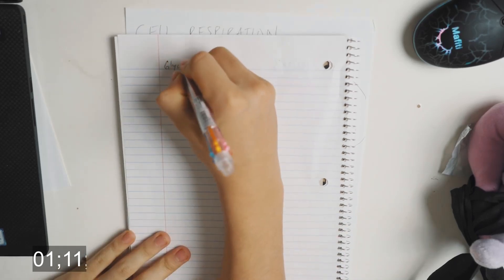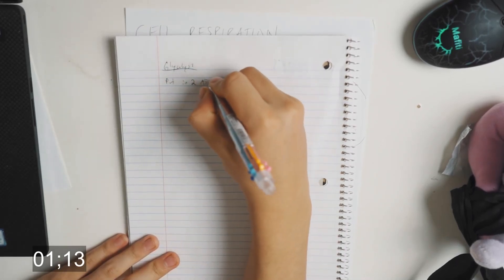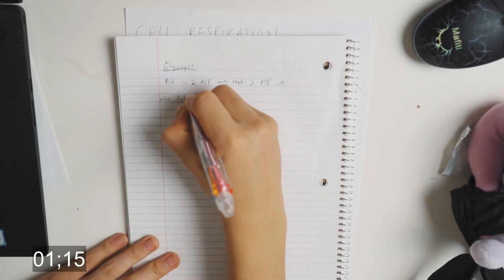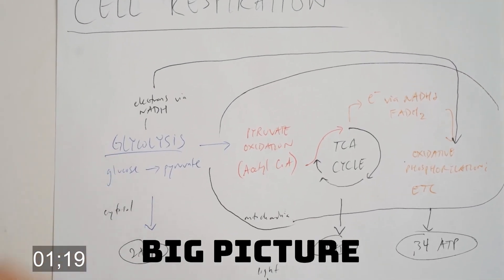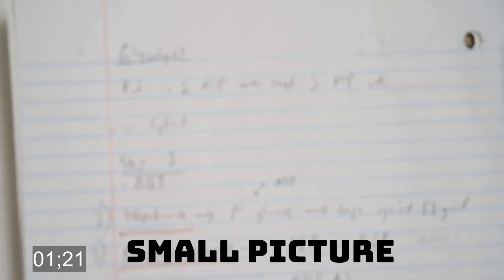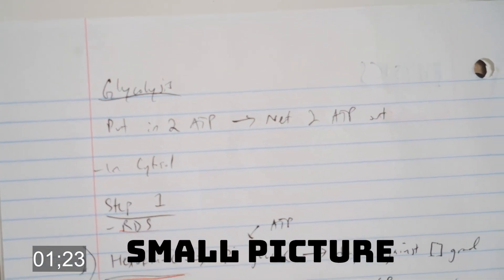Next you'll move on to the Detail slash Small Picture section. Here you'll be taking notes on the individual sections that fall within the big picture. For example, after doing a respiration overview, you might have an entire lesson on the investment phase of glycolysis. It's not that important to take the most pretty notes.